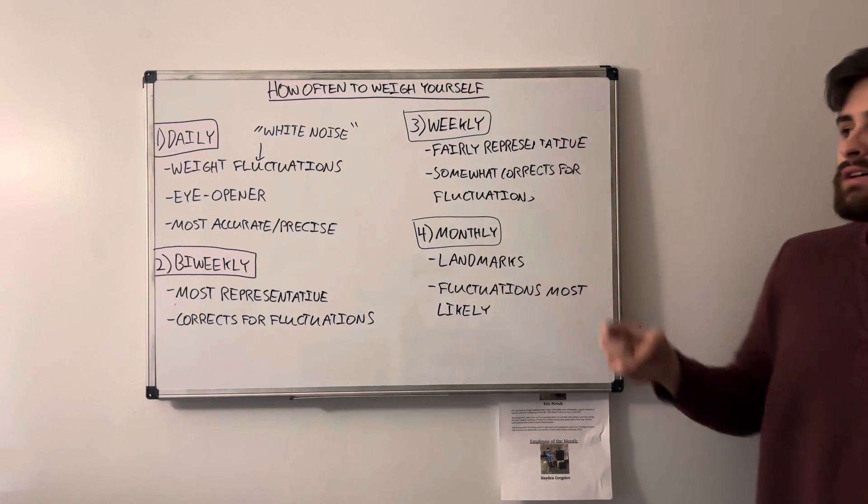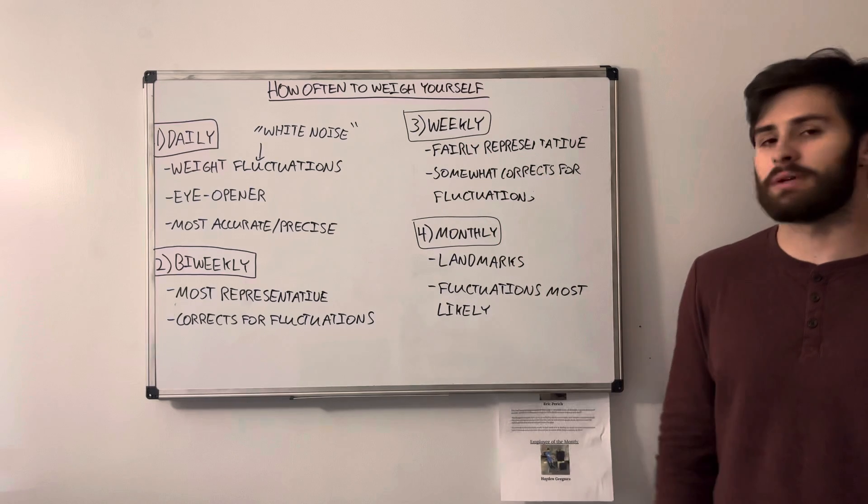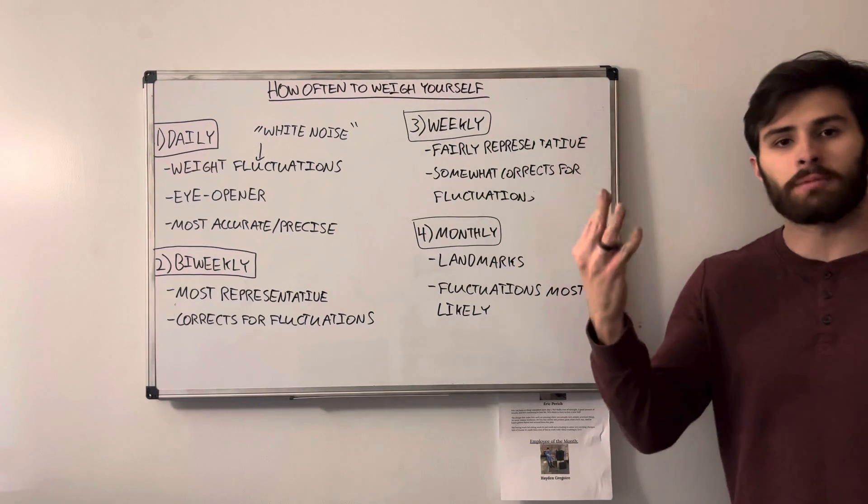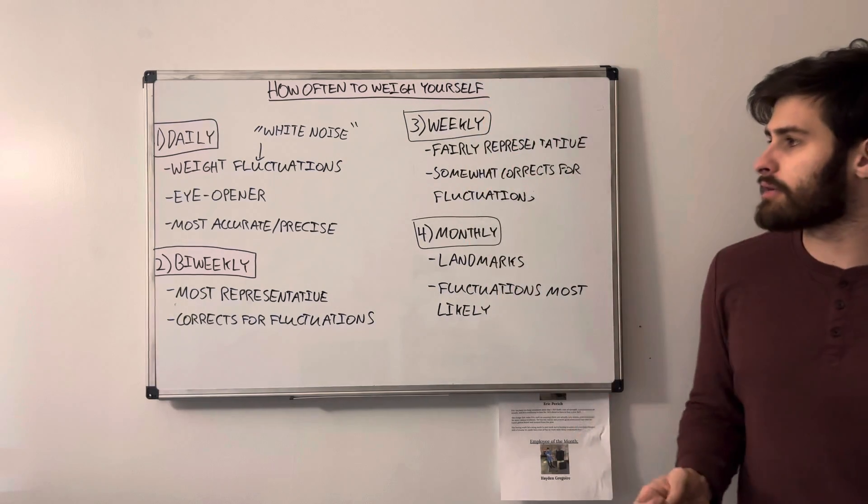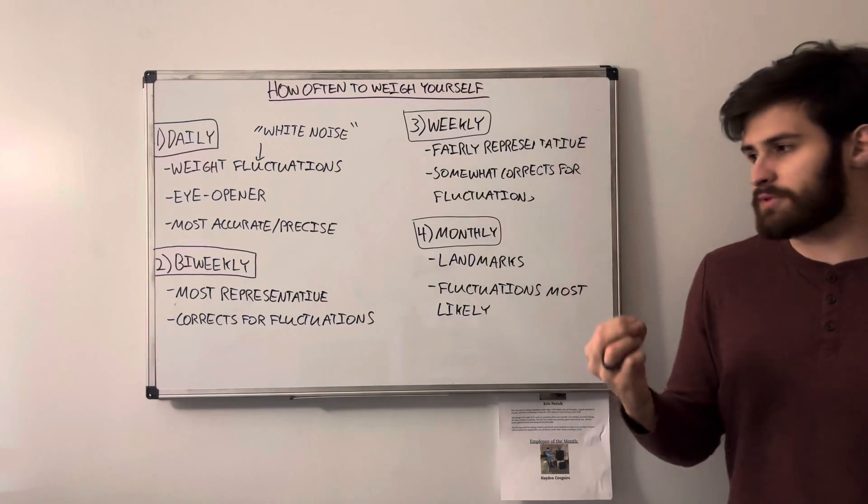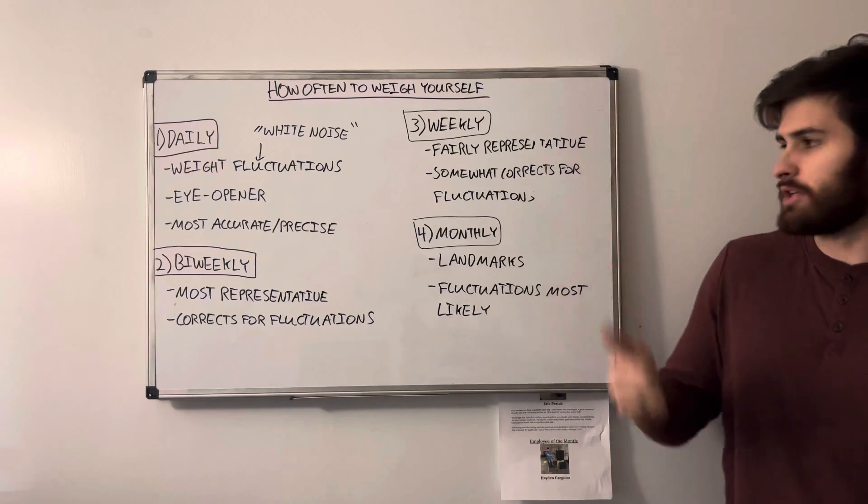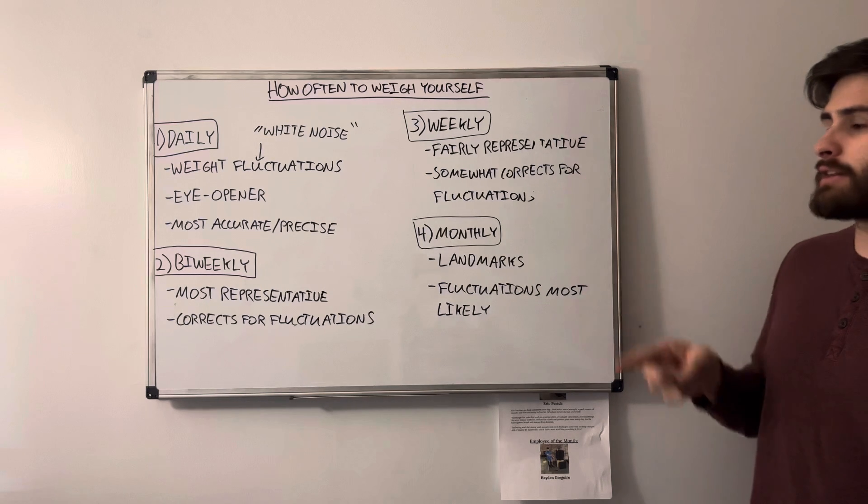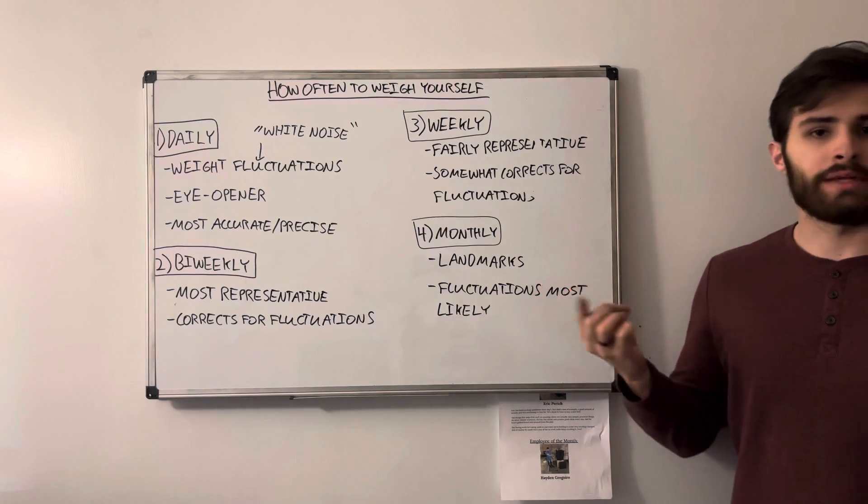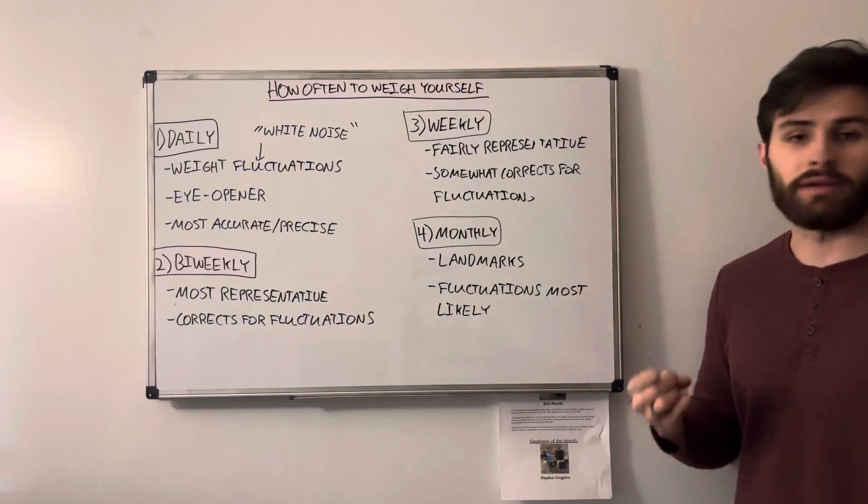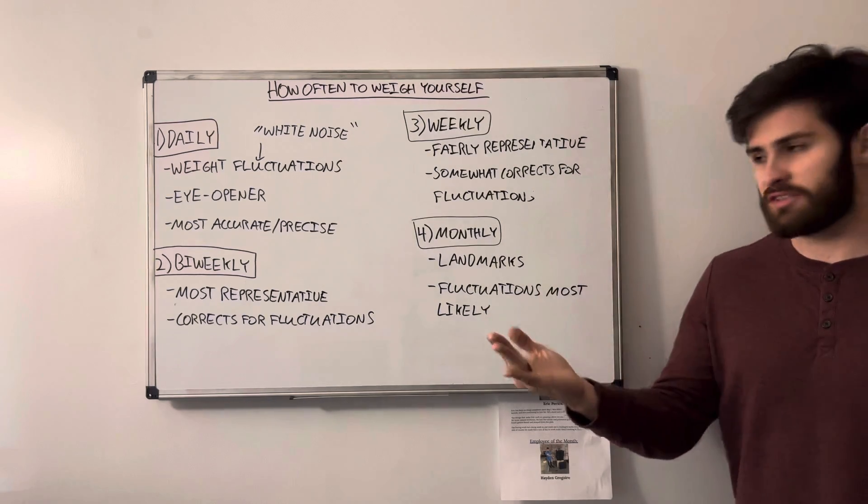Thirdly, we have weekly. So this is one step back from bi-weekly, so we only have one weekly measurement. This is fairly representative because now we have four measurements per month. It can give you a general plot line of where your progress is. It's not the most representative, as we can't account for changes within the week, but it's still pretty good. It somewhat corrects for fluctuations because it is still more frequently than monthly, which we'll get into in a second or even less frequently than that. So it still does a pretty good job at why we use the scale.